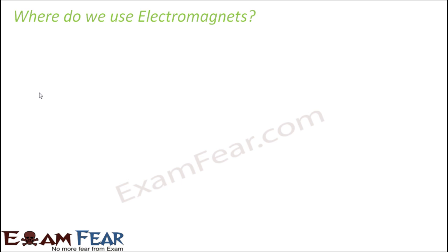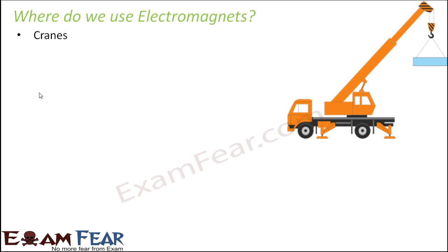Where do we use electromagnets? Electromagnets are very commonly used as components of many electrical devices. One example is cranes. These cranes are used to lift and move heavy objects. They have electromagnets, so all magnetic materials — for example iron and similar things, which are very heavy and sometimes difficult to locate — can be very easily picked up with the help of the magnet.